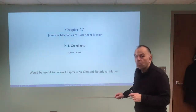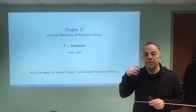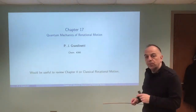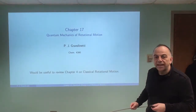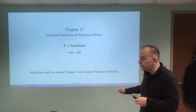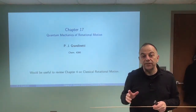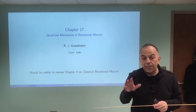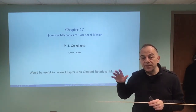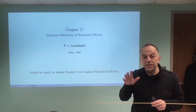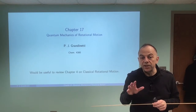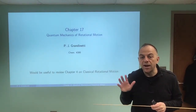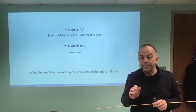In Chapter 4, we discussed the classical mechanics of describing the rotational motion of a rigid body, and that would be a good time to go back and review that material. Many of the concepts introduced in Chapter 4 will be used as we set up and solve the Schrödinger equation for the rotational motion of a molecule, here approximated as a rigid body.